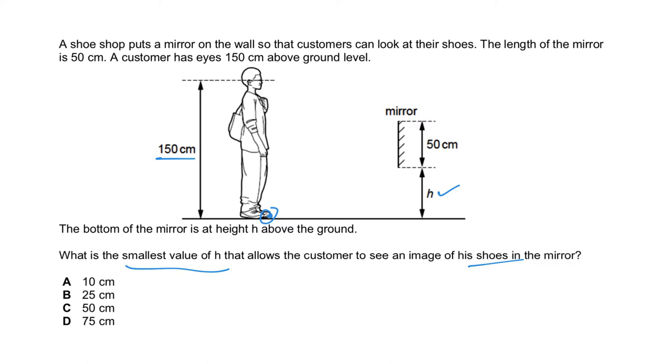Take note, the 150cm is from the eye level to the shoe, and this mirror is fixed as 50cm. You're supposed to shift the mirror vertically up or down so that the H here has to be minimum in order to see the shoe.